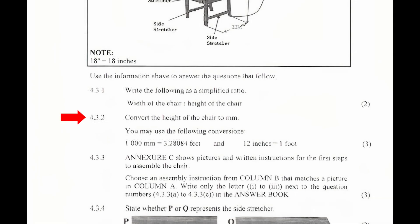4.3.2. Convert the height of the chair to millimeters. You may use the following conversions: 1,000 millimeters equals 3.28084 feet and 12 inches equals 1 foot. We will first convert the height of 42 inches to feet and then convert the feet to millimeters. So, the height of the chair is 42 inches divided by 12 and this equals 3.5 feet.